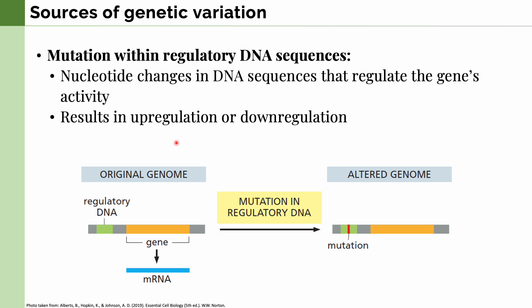When we say upregulation, this means that the gene is highly expressed, and when we say downregulation, this means that the gene is not expressed by the cell. In this figure, we can see the regulatory DNA upstream of the gene, and when there is a mutation in this regulatory DNA, the gene is downregulated, as indicated by the absence of the mRNA, which is found in the original genome.